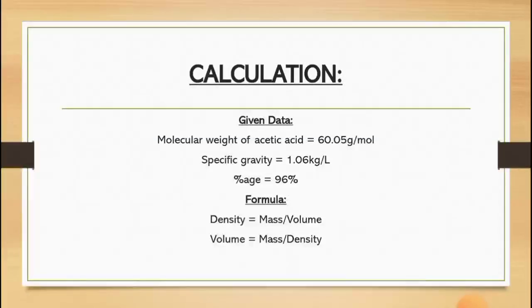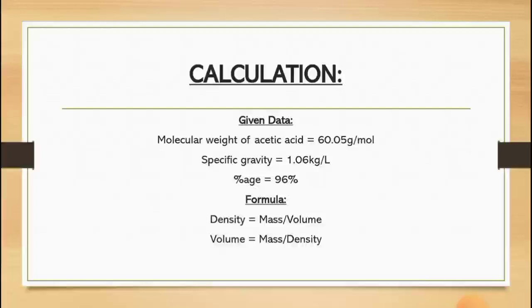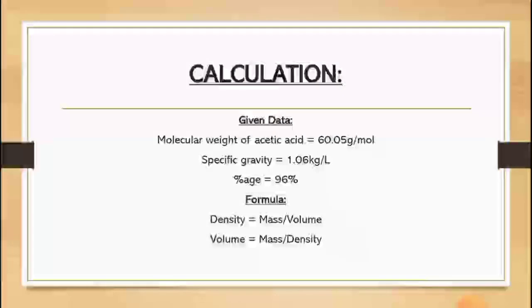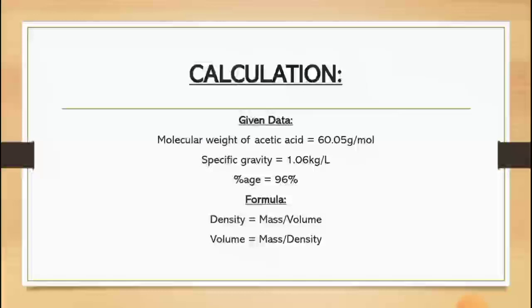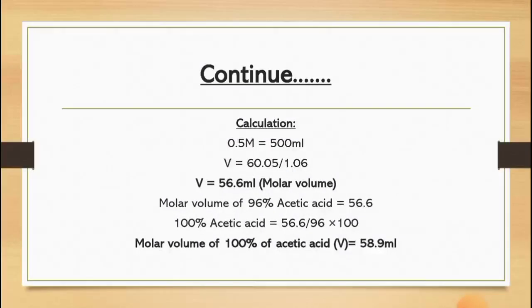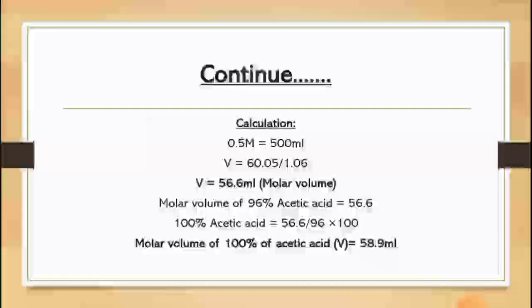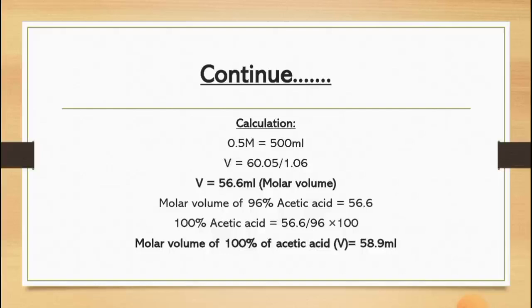The formula by which we have to calculate the volume we use here is the density, as we have to calculate it by the density method. Density's formula is mass over volume. As we have to calculate the volume, we will shift the formula that results in mass over density. By adding the amount of density, we get the molar volume of 56.6 ml.